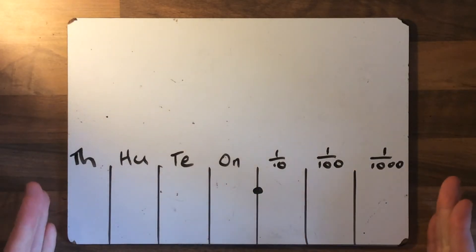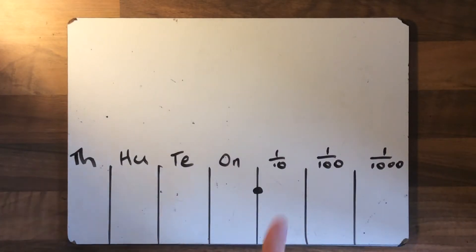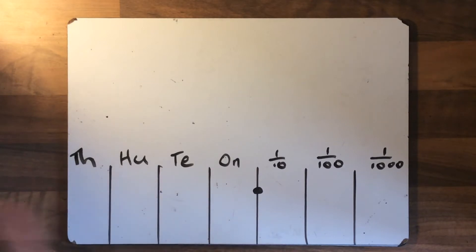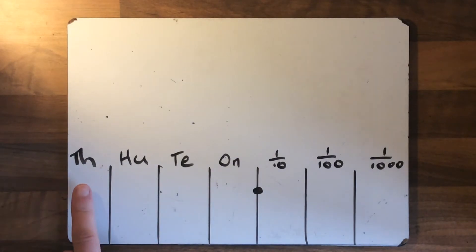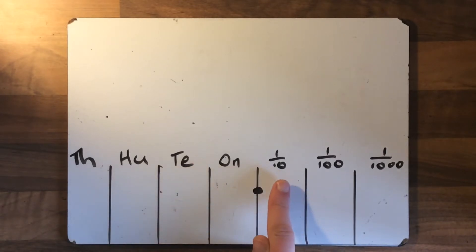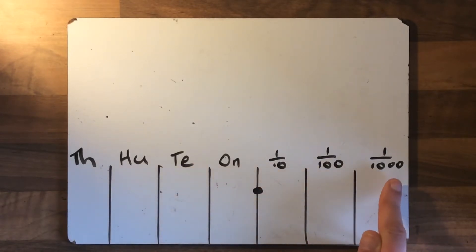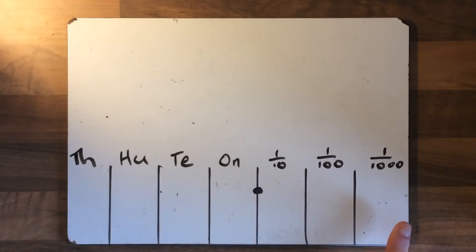This is obviously only a section of the place value chart — because it would go on infinitely to the right after the decimal point and infinitely to the left as well. So we've got the left of the decimal point, but this is just the middle section of it, if you like. And we've got the thousands column, hundreds column, the tens column, the ones column, tenths, hundredths and thousandths. These are the ones after the decimal point, or the ones that are less than one, and these can be useful to help us to round.